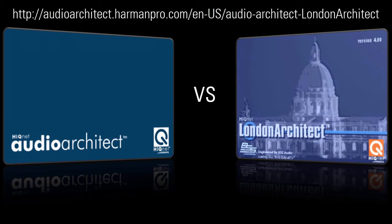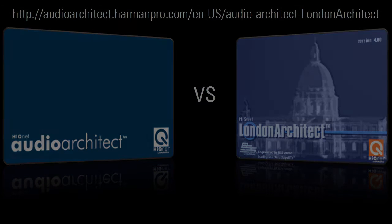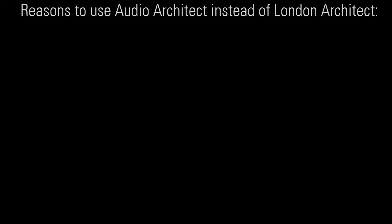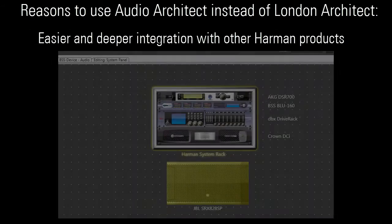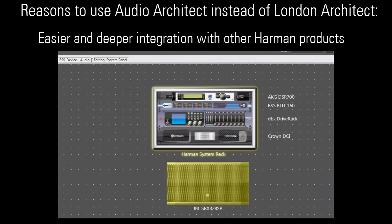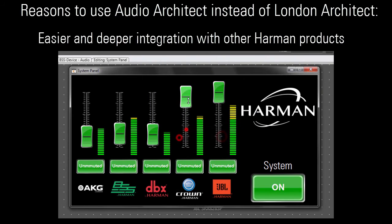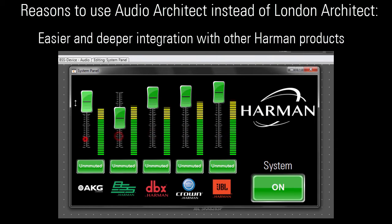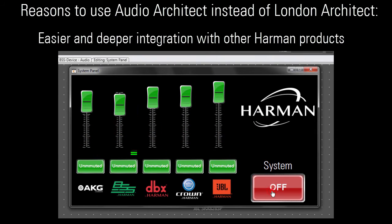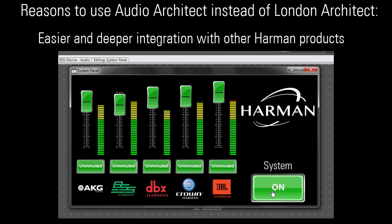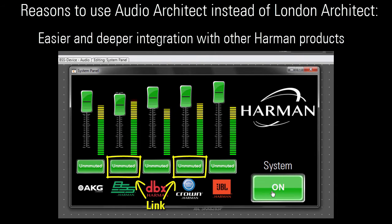Here are some of the benefits of using Audio Architect instead of London Architect. Audio Architect offers easier integration with other Harman products because everything now happens within one software application. Also, a greater depth of integration is now possible — for example, you can now link BSS audio parameters directly to Crown parameters.